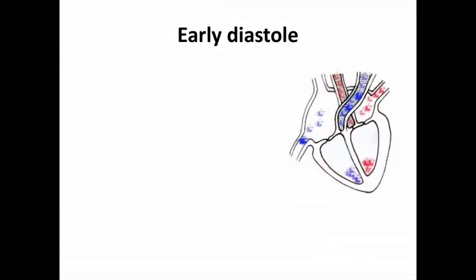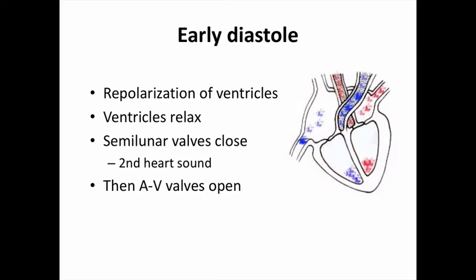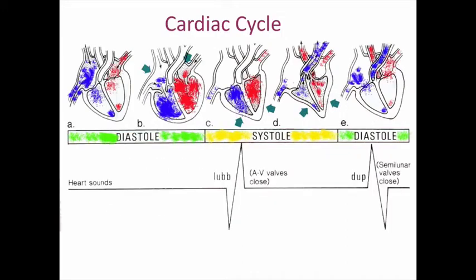We then return to early diastole, which is repolarization and relaxation of the ventricles. The semilunar valves close — and as soon as they shut, that's the second heart sound. The AV valves open and remain open until the ventricles start to contract again, beginning passive ventricular filling. Blood has already been returning to the atria throughout this process — the atria fill first, followed by the ventricles. That completes the cardiac cycle.